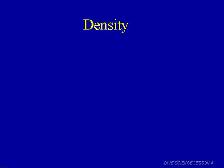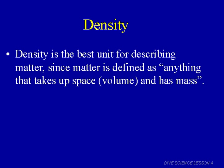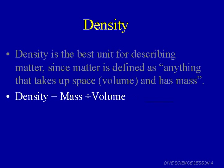Now that you know about mass and volume, we can talk about density. Density is the best unit for describing matter, since matter is defined as anything that takes up space or has volume and has mass. Density is mass divided by volume, or mass per unit volume. In a formula: D equals m divided by v.